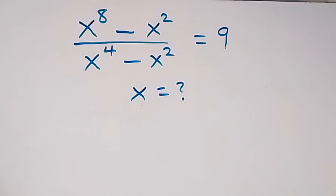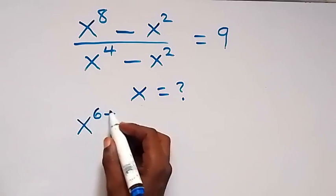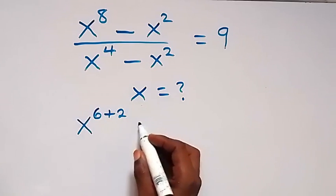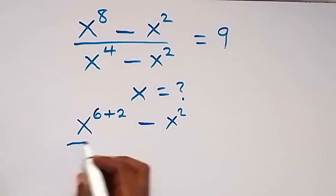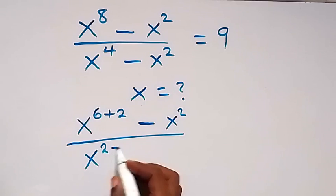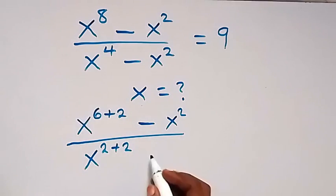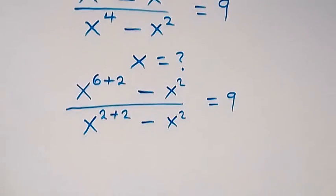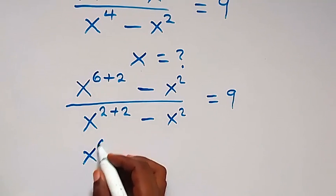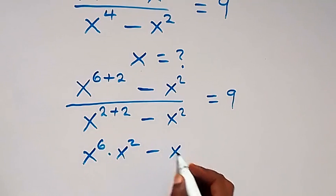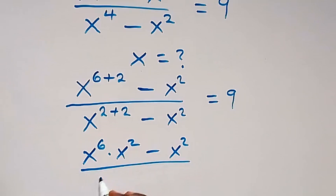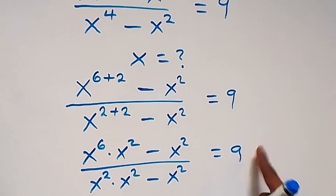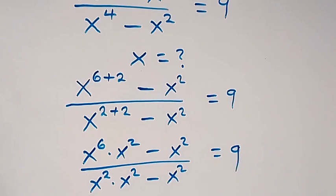Hello, you are welcome. How to find x in this nice algebra problem. From here we can write this as x raised to power 6 plus 2, as x raised to power 8, then minus x squared. Also here we can write this as x raised to power 2 plus 2, as x raised to power 4, then minus x squared, which equals 9. From the law of indices, x raised to power 6 times x squared, then minus x squared, equals 9.